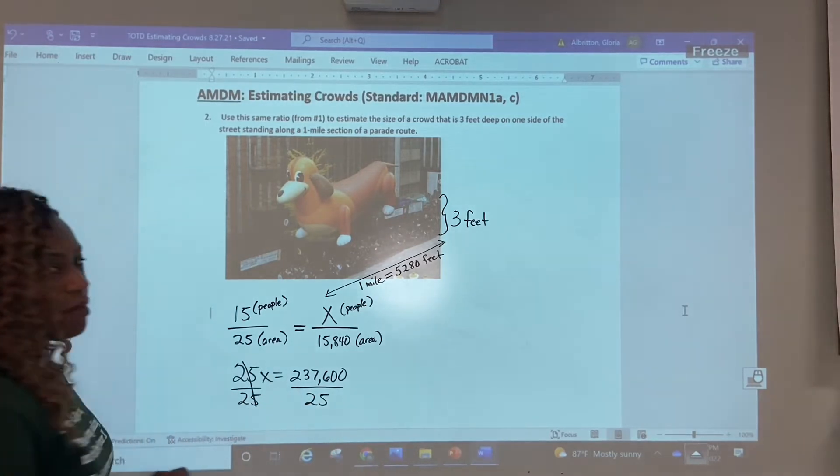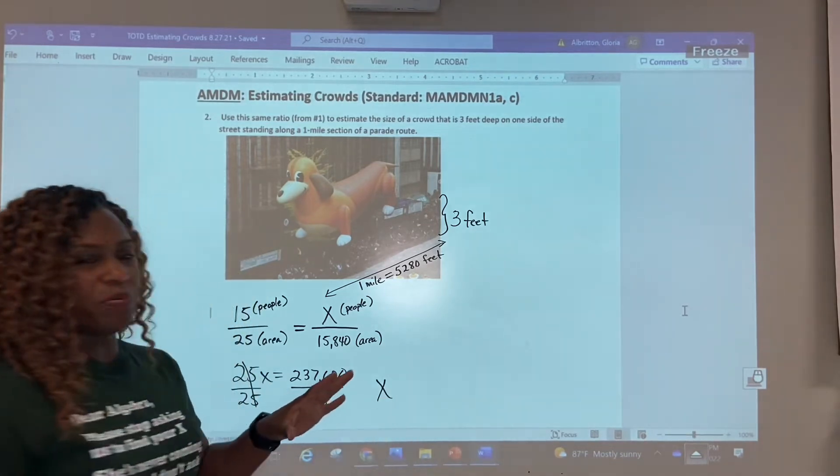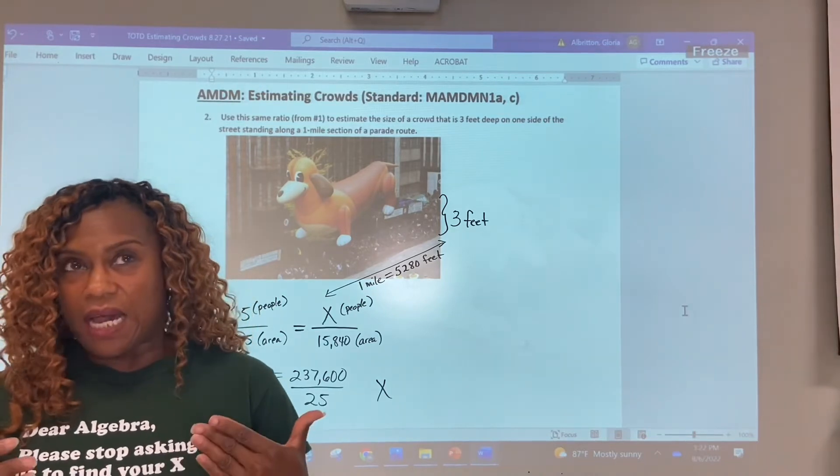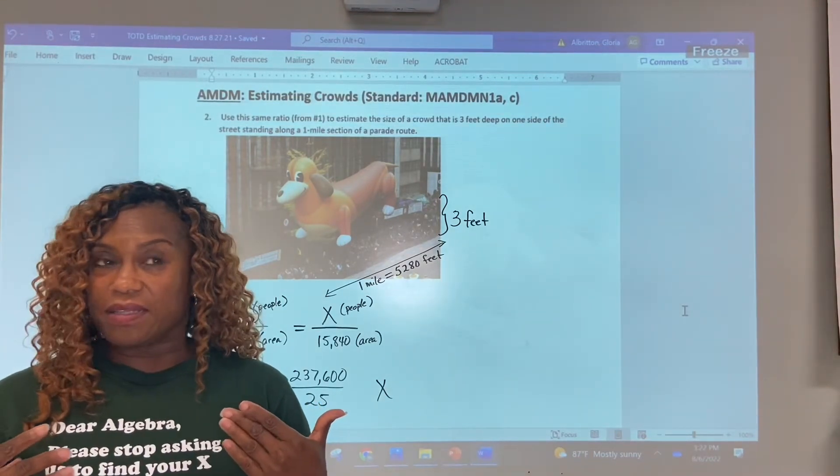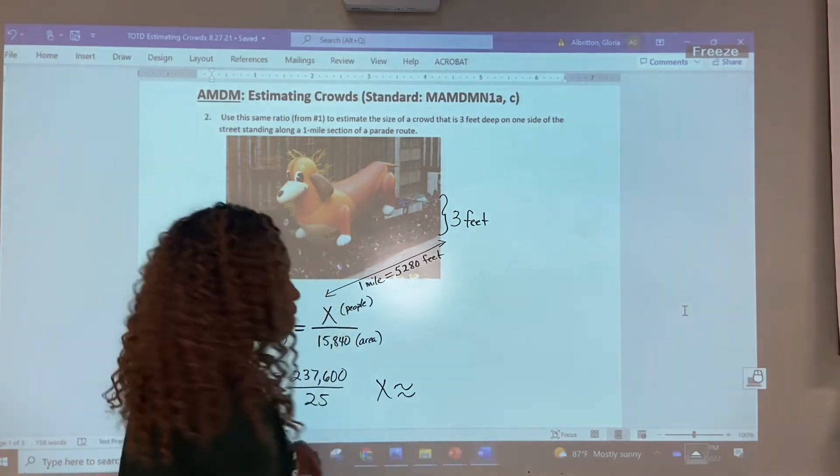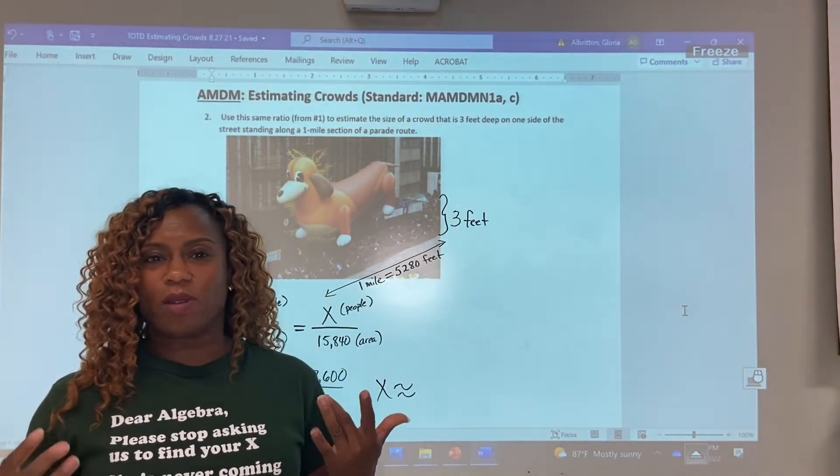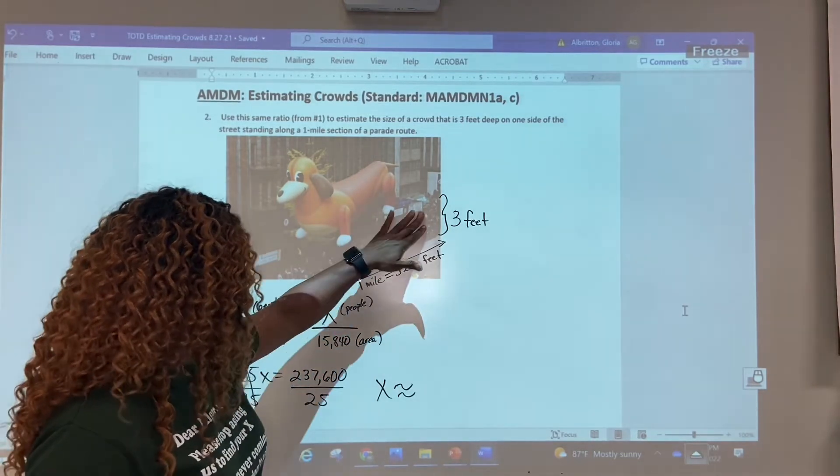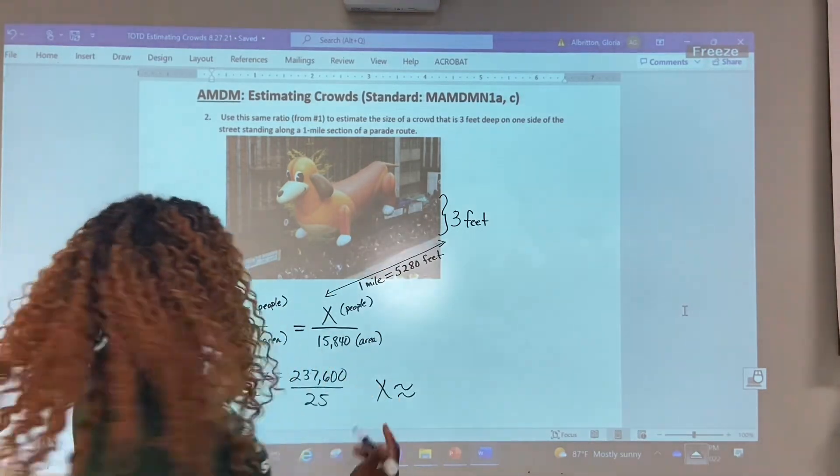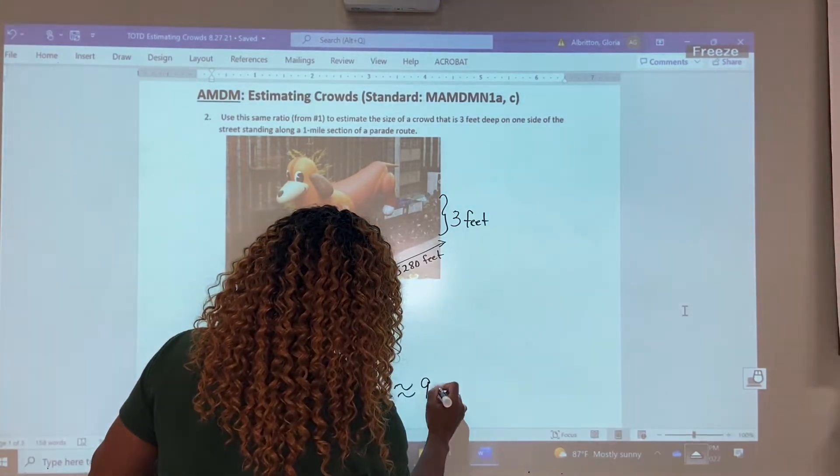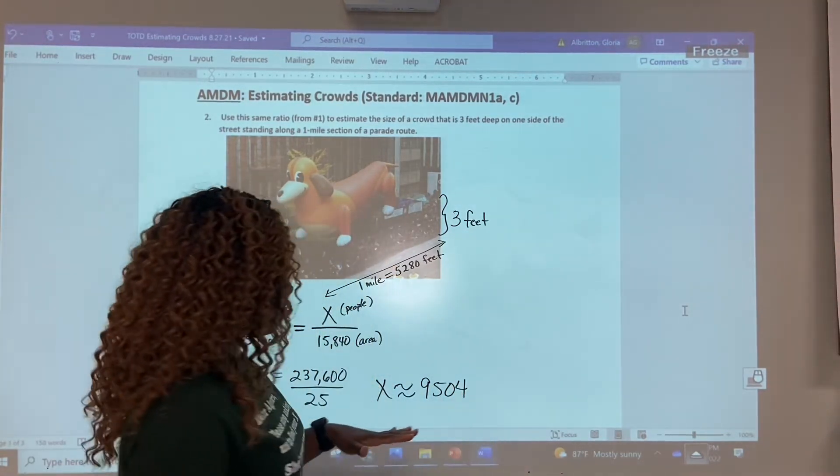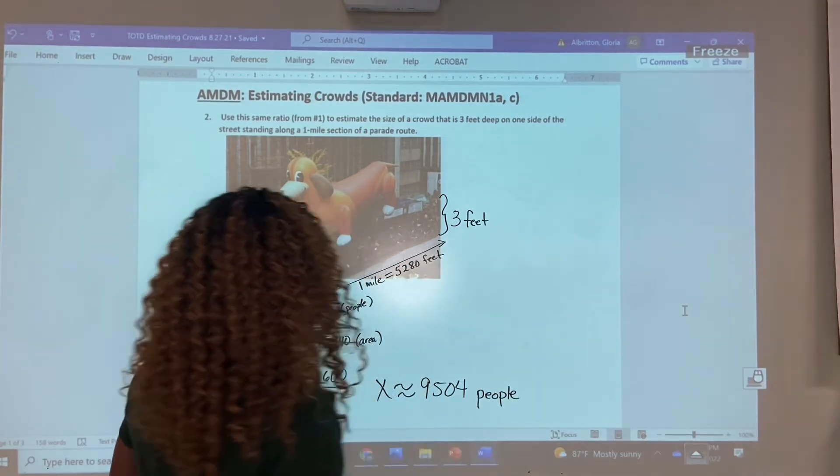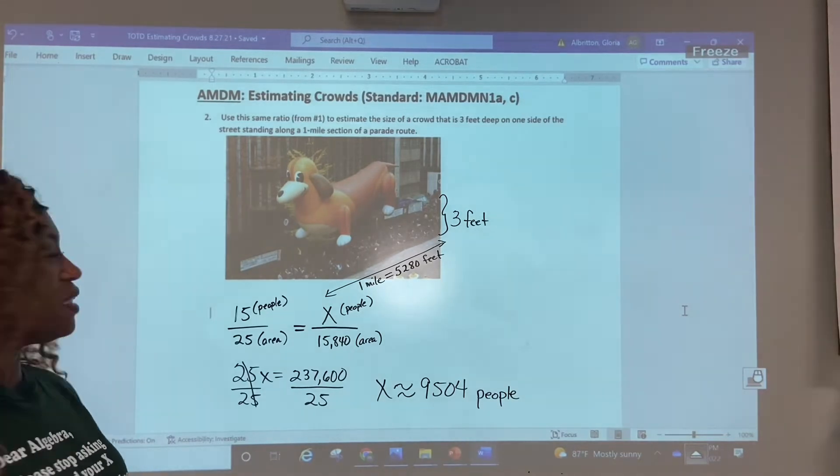This will cancel out and we'll have our x left, but I'm not going to put x equals. If you recall from problem number one, since this is an estimate, we're going to put down this symbol right here. This means approximately equal. So the people in the crowd that will fit in this amount, how many people is in here? An estimate of that. If we divide that, we're going to end up with 9,504 people about. So this is an estimate. So there's your answer. And we're going to do problem number three.